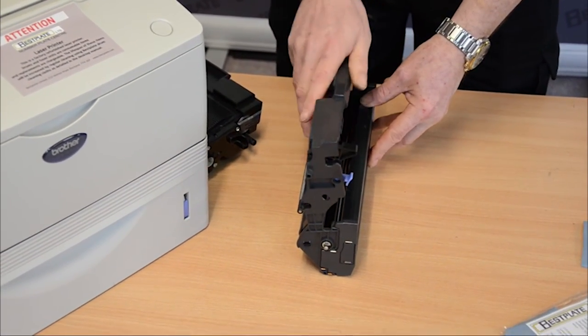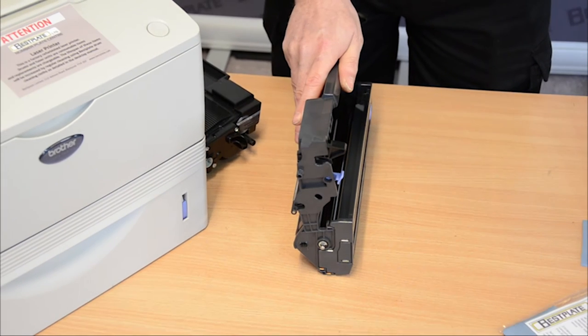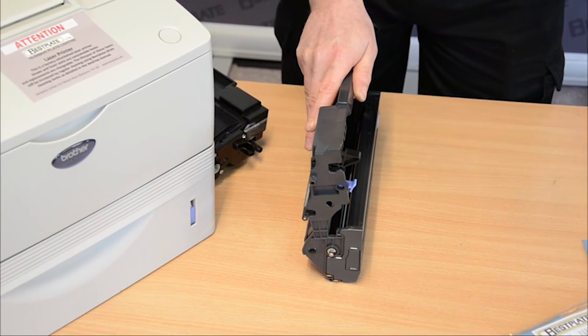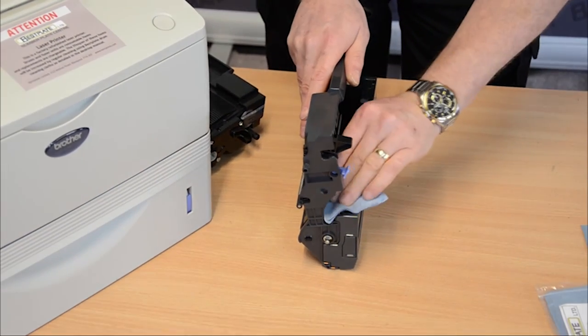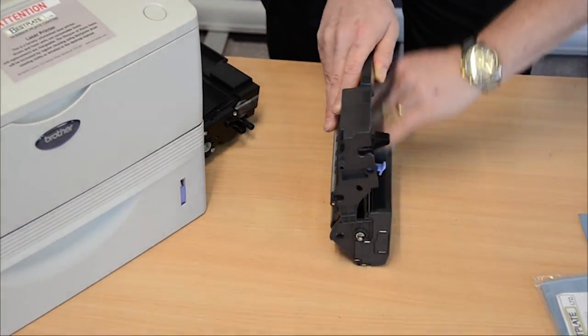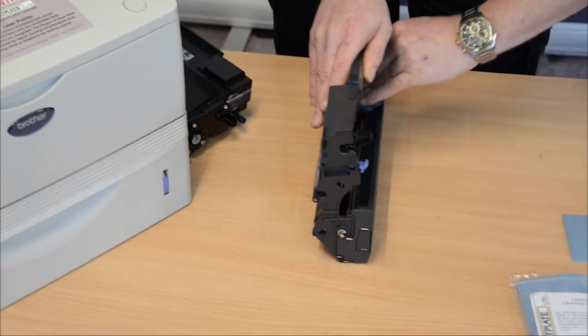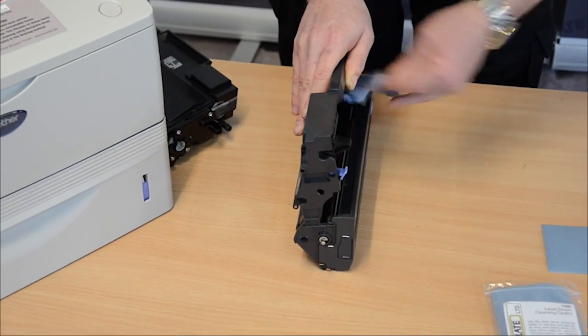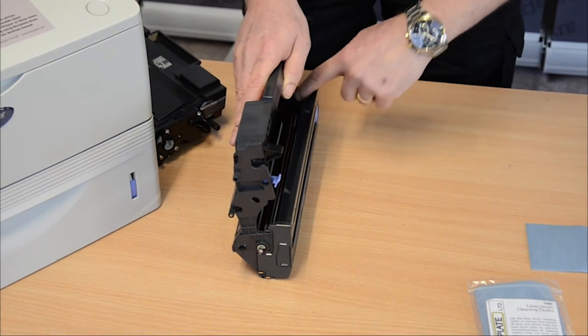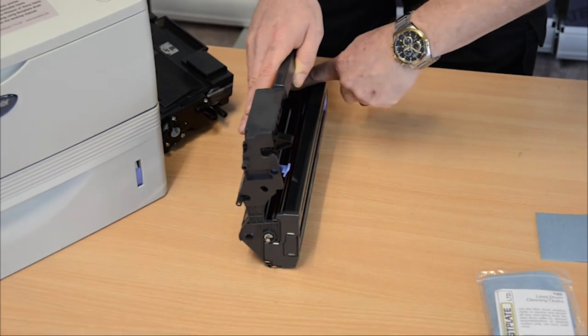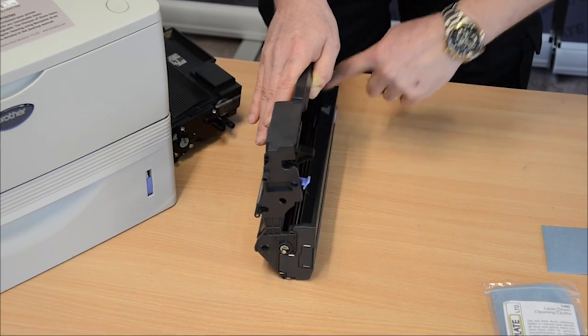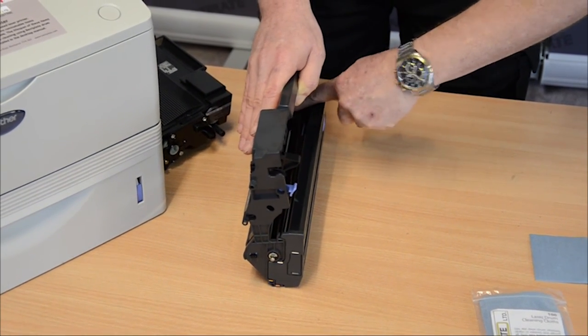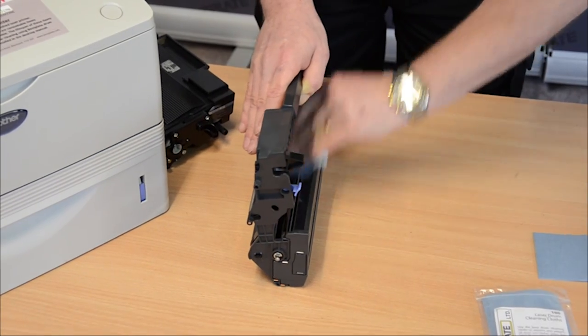Place the unit on the table and take a drum wipe, which you can get from bestplate.com and wipe the surface of the drum, removing any toner from it. Using the cogwheel at the end, turn the drum and continue to wipe until you've gone all the way around the drum itself.